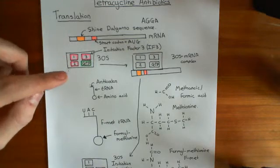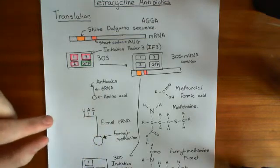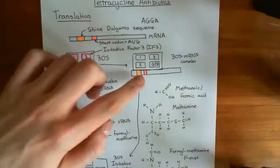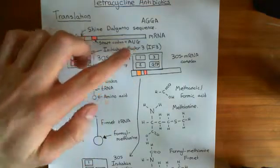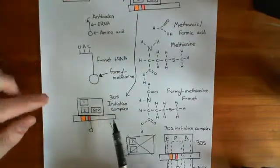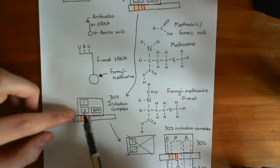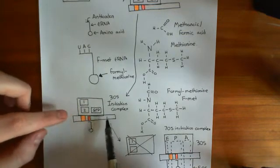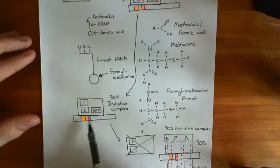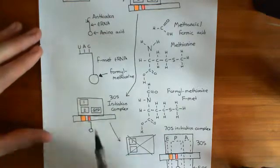The next step is to take a formylmethionine-charged tRNA, which has the complementary anticodon for the start codon on your mRNA, which is AUG, and bind that to make a 30S initiation complex — the 30S ribosomal subunit still with initiation factors 1 and 2 and the GTP, with an mRNA and this formylmethionine-tRNA now bound to the start codon. In that process, the third initiation factor cleaves off.